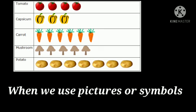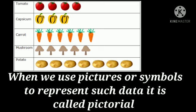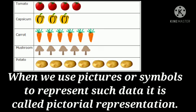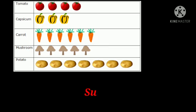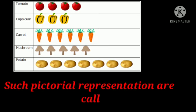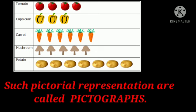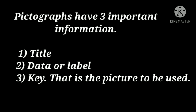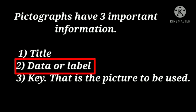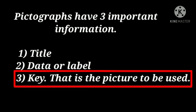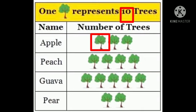When we use pictures or symbols to represent such data, it is called pictorial representation. Such pictorial representations are called pictographs. Pictographs have three important pieces of information: title, data or label, and key — that is, the picture to be used. Each image stands for a certain number of things.